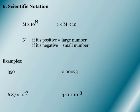Your exponent is going to tell you if you're a large number or a small number. Obviously if your exponent is positive, you're going to be a large number. If the exponent is negative, you're going to be a smaller number.